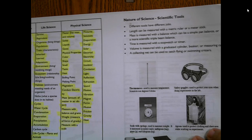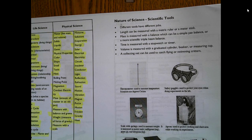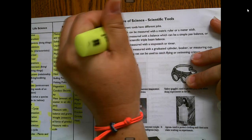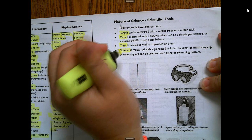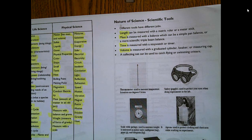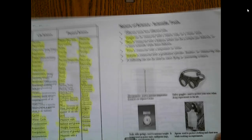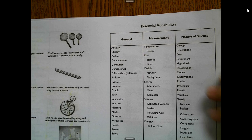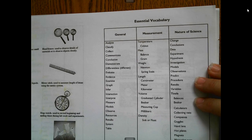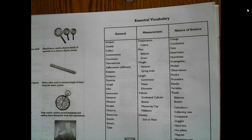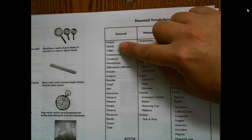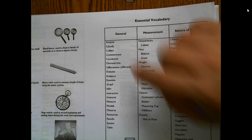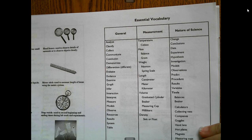Over here, scientific tools — different tools have different jobs. It covers how to find mass, time, and volume, with images of different tools. The next page continues with tools and has more essential vocabulary. These are things that might appear in a question, like: what does it mean to analyze, classify, collect, conclude, or evaluate? Those terms might pop up.